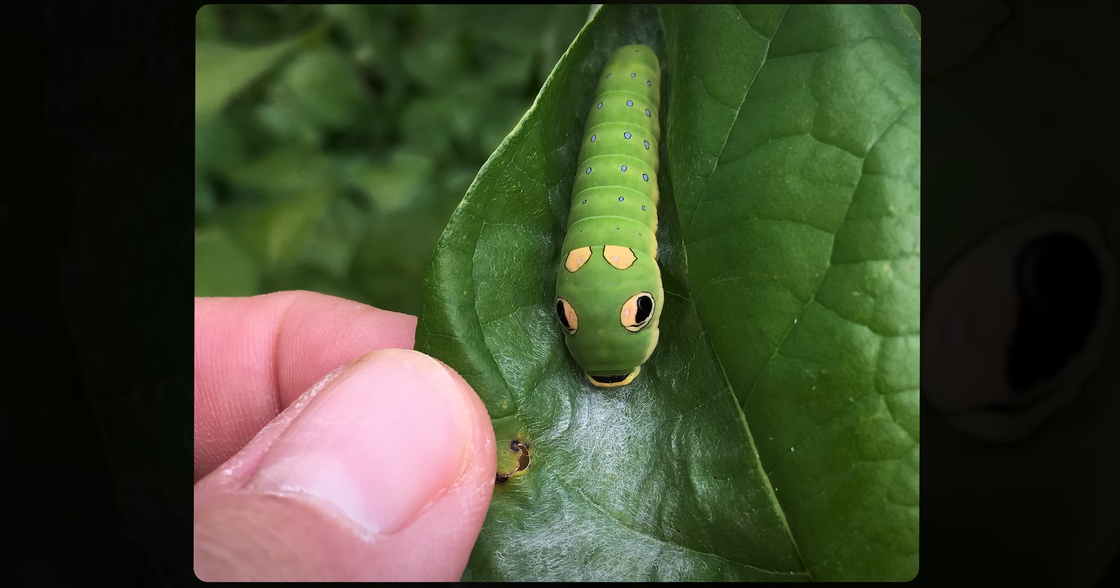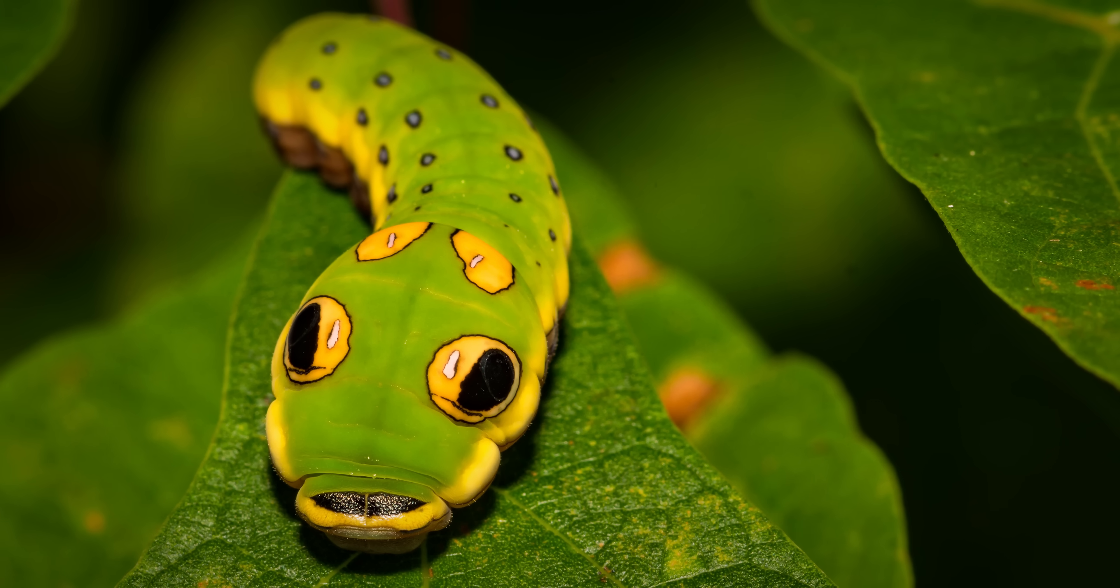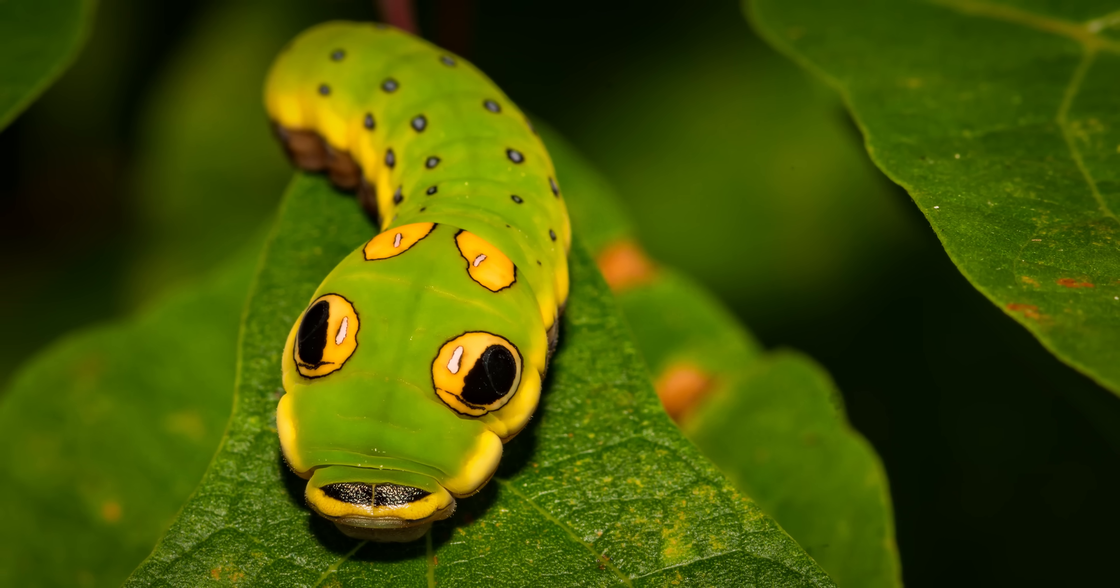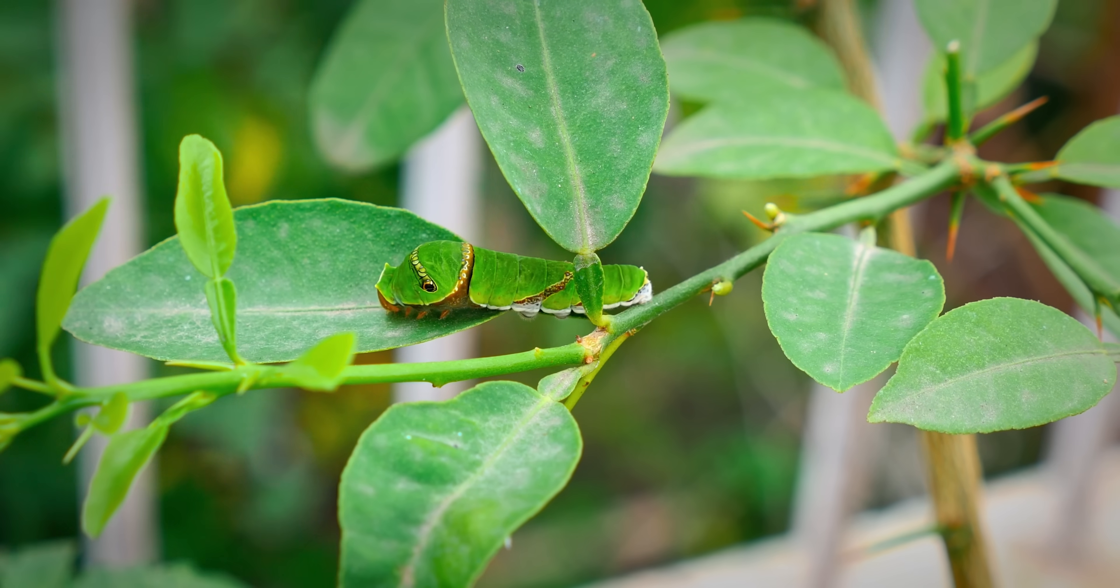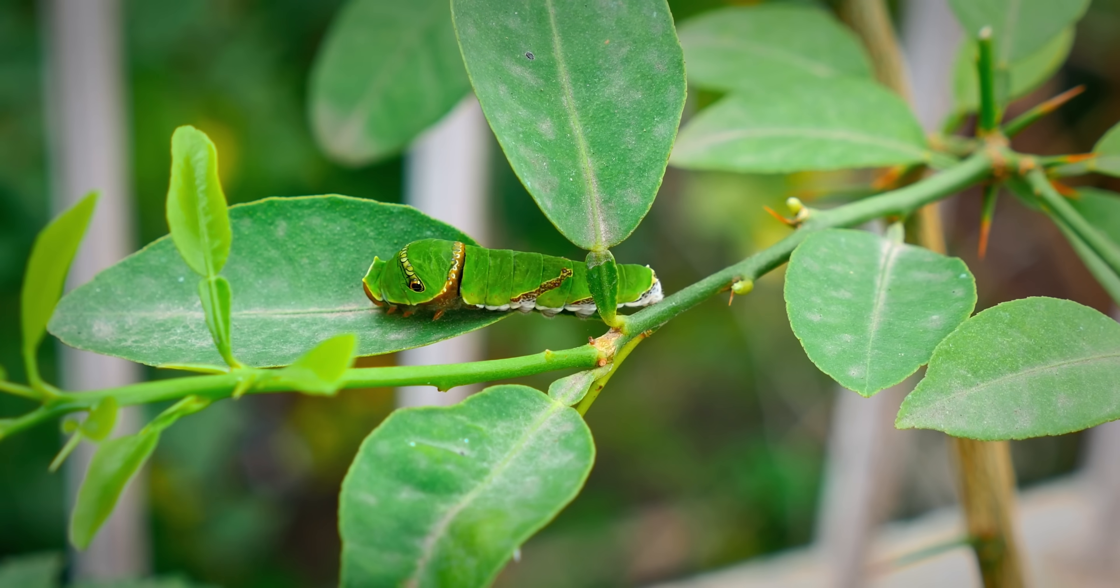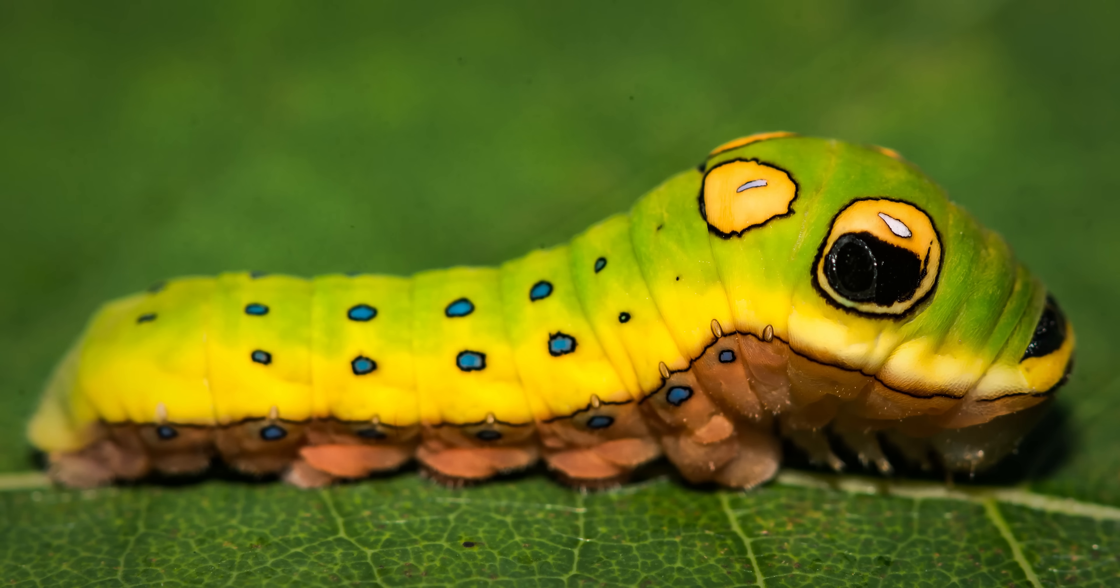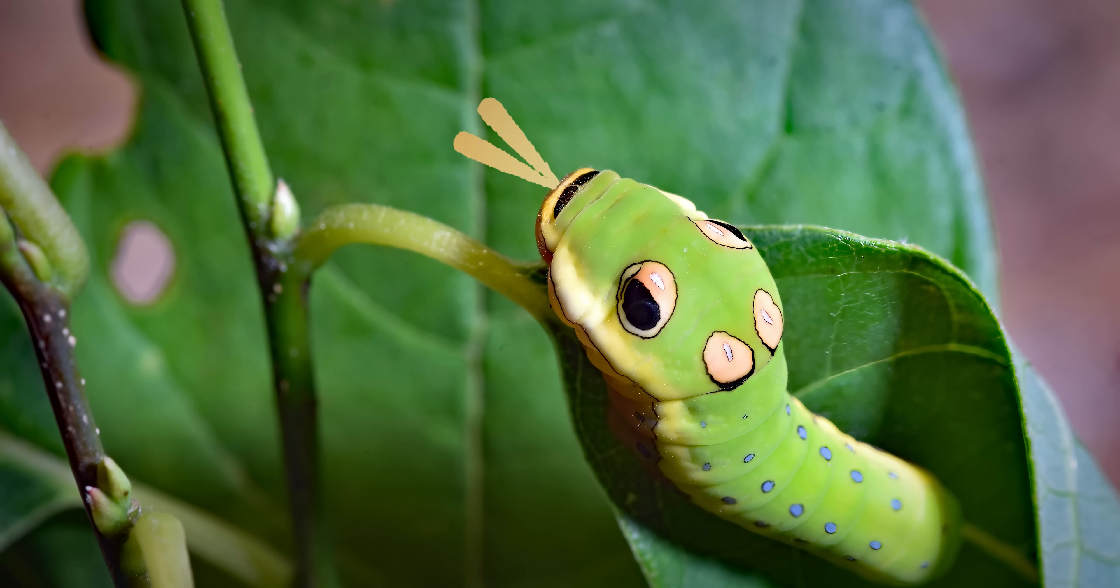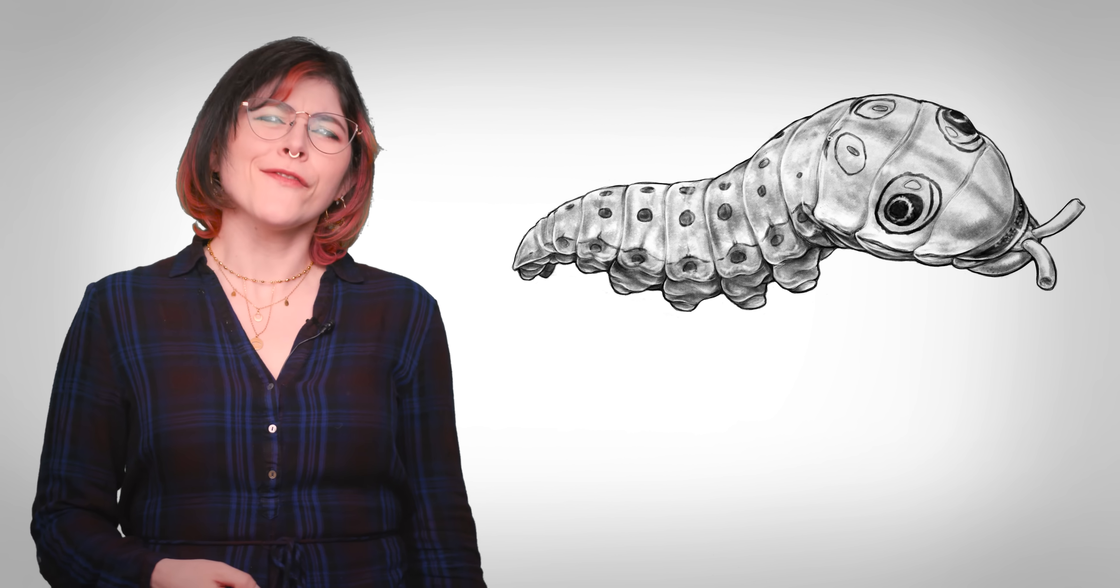This is the Spicebush Swallowtail Caterpillar. Another fake-out mask-wearing caterpillar. It has a blotch pattern designed to look like a snake, and it has serpentine moves to scare off potential predators. It even has an organ specifically designed to look like a snake's tongue. Hey there, Caterpie. Since most of their predators are birds, this is the insect version of a scarecrow. It's a display that gives Kaa a run for his money.